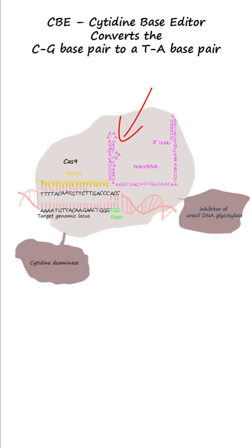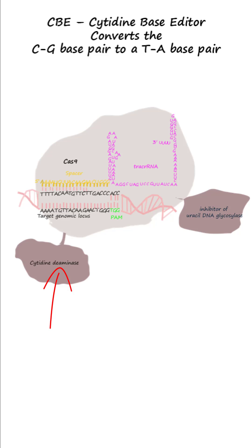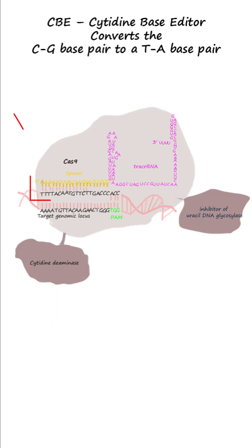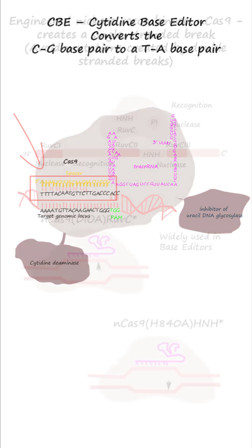A guide RNA, a modified Cas9 nickase, a cytidine deaminase, and an inhibitor of uracil DNA glycosylase are involved. The guide RNA leads Cas9 to a specific locus based on complementary base pairing.